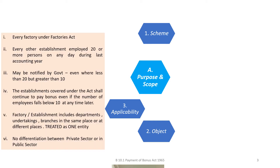Applicability covers every factory under the Factories Act and every other establishment employing 20 or more persons on any day during the last accounting year. The coverage continues even where the staff strength of an establishment falls below 20 — it is like once covered, always covered. The government also has the discretion to cover establishments where the staff strength is less than 20 but above 10.